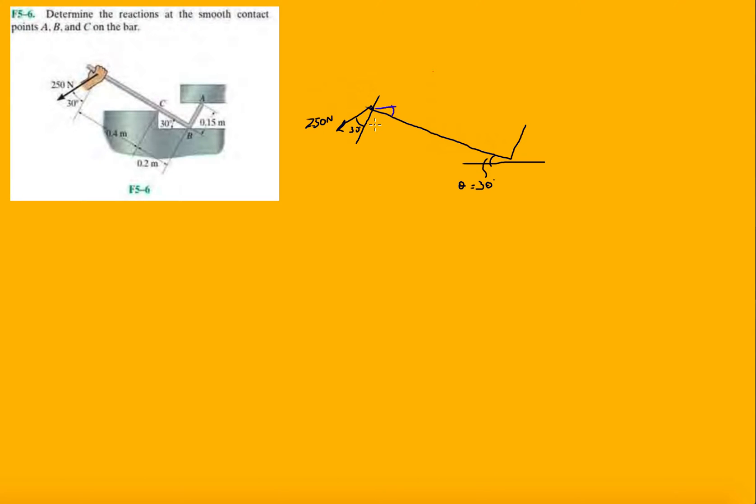And then this leaves us with 30 degrees here, because this one is 90, so then this has to be 30. So now when we're gonna split up this 250 newtons force, we're gonna split it up into the X and Y component using this total angle of 60 degrees.